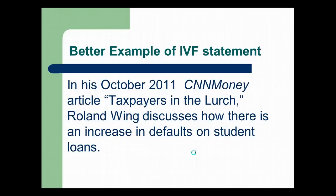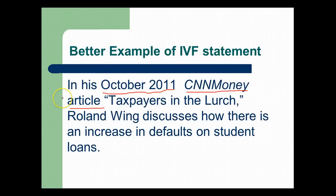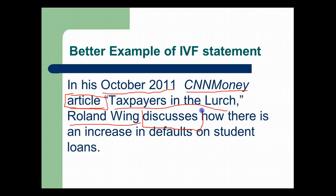This is a good example of an IVF statement because here we have the date — so this is relatively new — the source (CNN Money), the genre (article). If this had been a news video on the internet, you would put 'news clip' or 'news video' or the appropriate genre. It includes the title, the writer's name, the verb choice 'discusses,' and then here's the main idea of the article: how there is an increase in defaults on student loans.